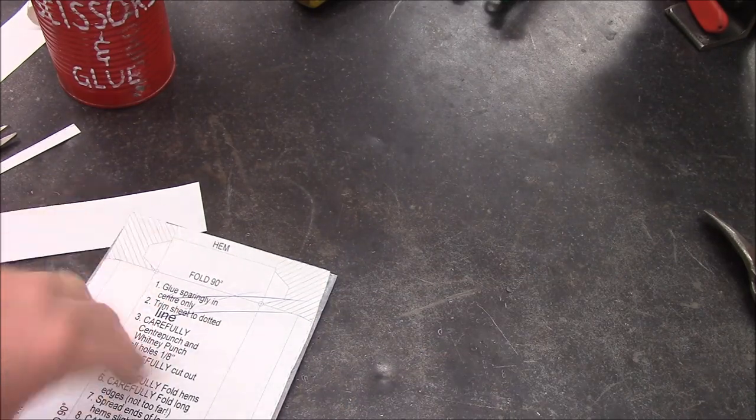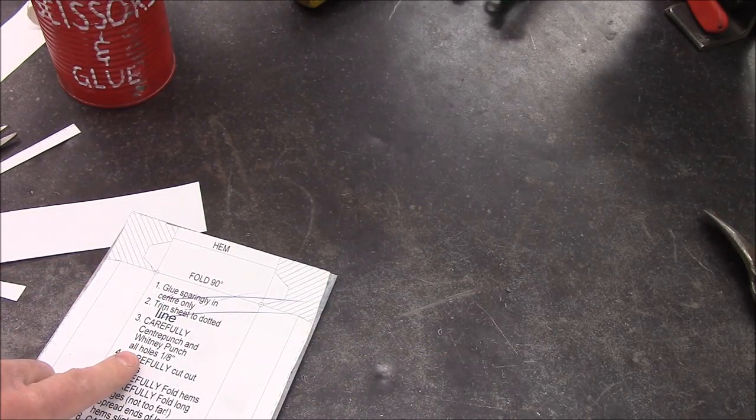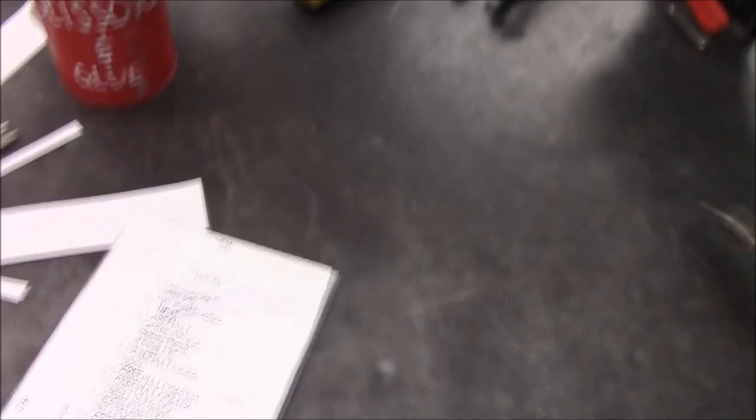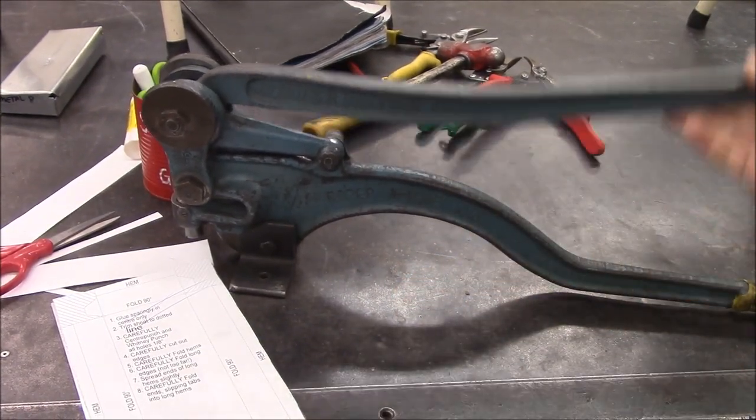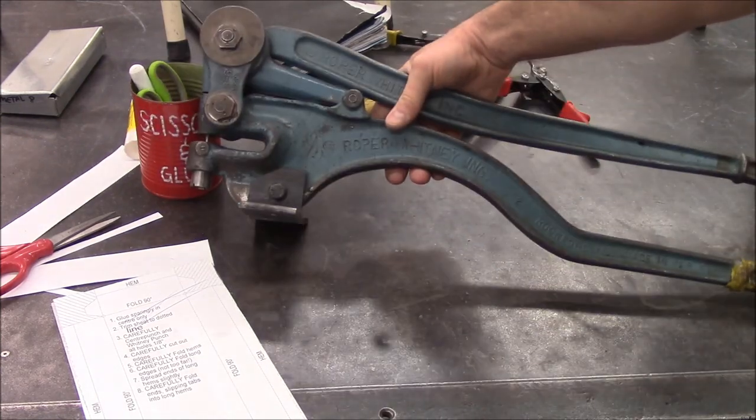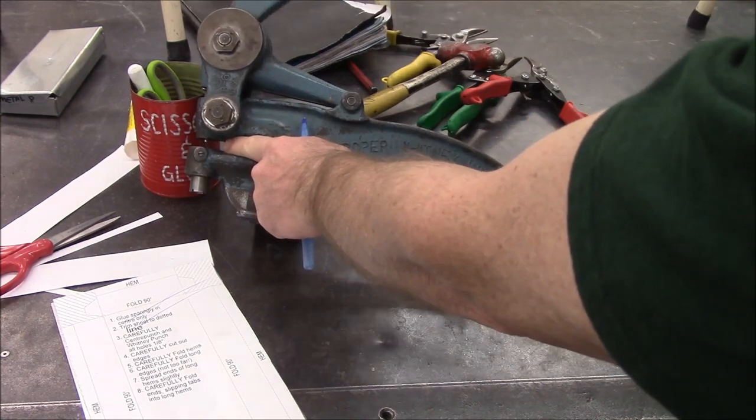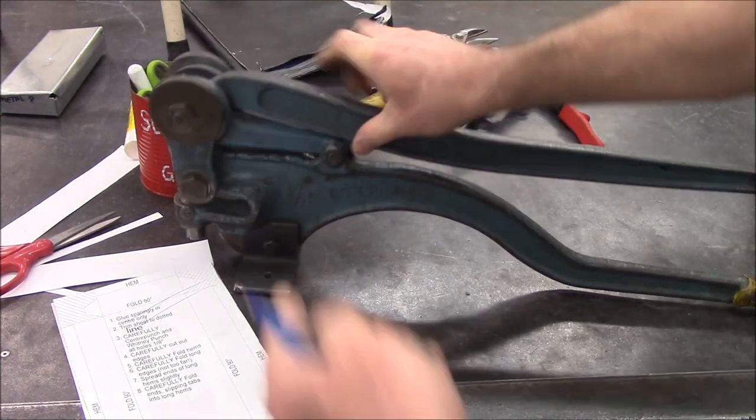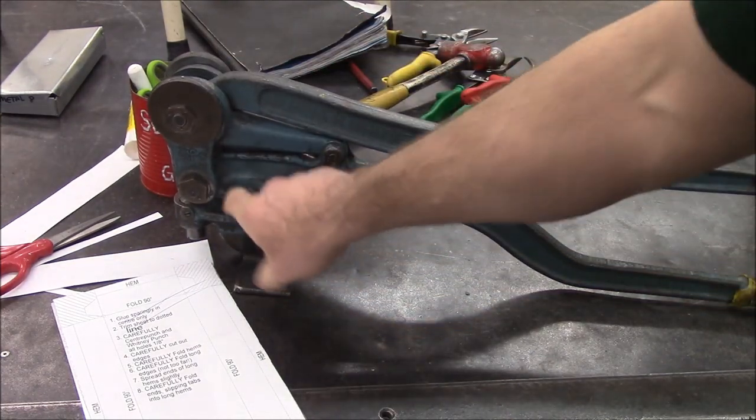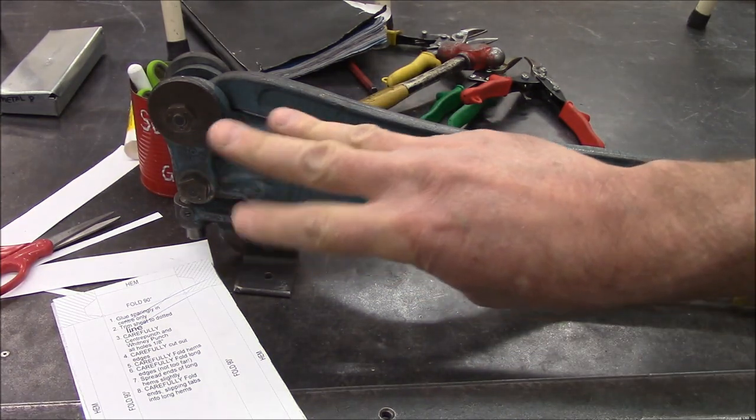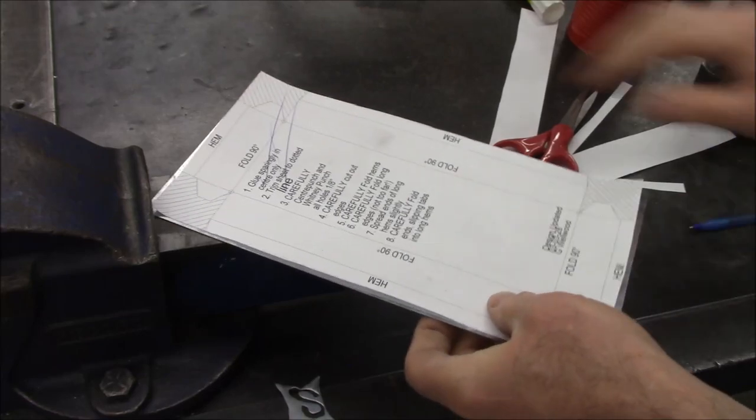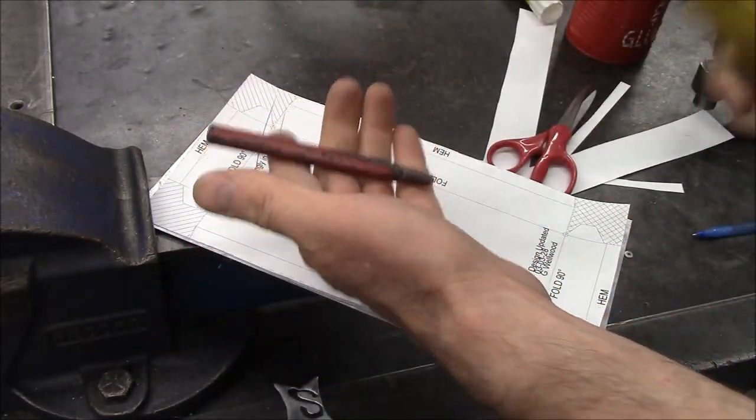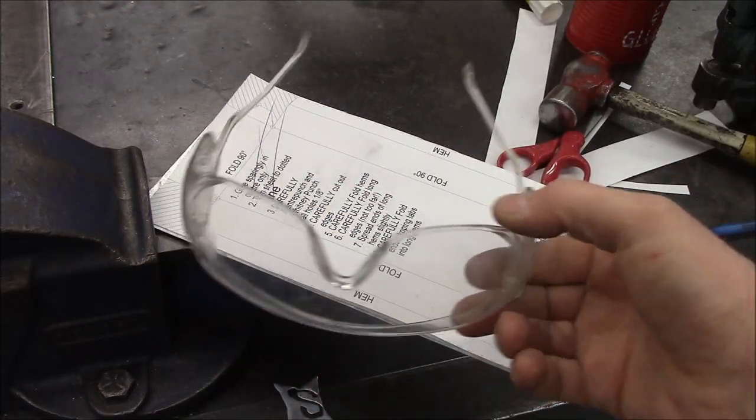Trim sheet to dotted line. Carefully center punch and Whitney punch all holes one-eighth of an inch. This is a Whitney punch made by the Roper Whitney Company. It works really well, super easy. Inside the tips is a little punch thing. This thing needs a center punch mark. So we're going to center punch over here. I recommend center punching on the back of the vise. We're also going to put on eye protection. Princess Auto, and it says right here, warning, wear safety goggles, user and bystander.